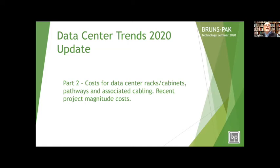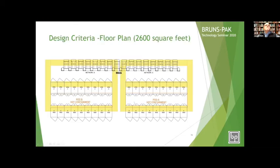Part two is an interesting analysis — the cost for data center racks, cabinets, pathways, and associated cabling with recent, September project magnitude costs. These costs were actually bid, so this is not a guess. The data center we did this analysis for has 36 IT racks and 16 network racks with overhead two-tier tray, hot containment, Pod A, Pod B, Network B, Network A, and the MDA. It's a 2,600 square foot data center.